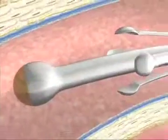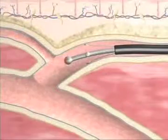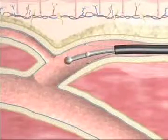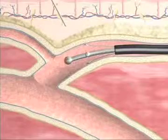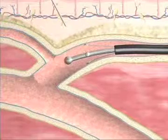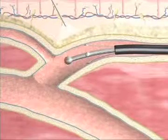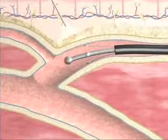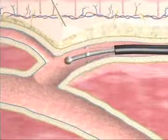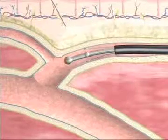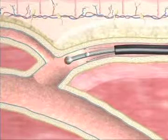Initially, the catheter has to be placed into the vein, usually down near the knee, and then is passed up through the vein with ultrasound guidance up to the top of the thigh, called the saphenofemoral junction.